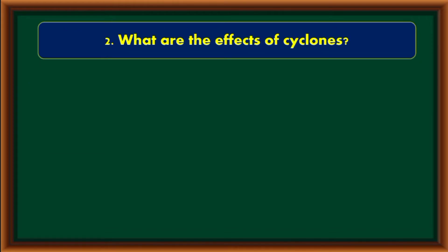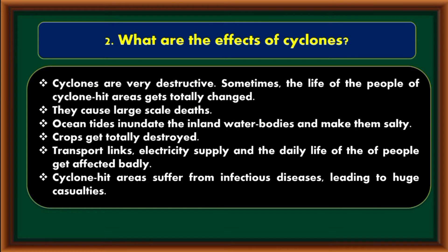What are the effects of cyclones? Cyclones are very destructive. Sometimes the life of the people of cyclone-hit areas gets totally changed. They cause large-scale death. Ocean tides inundate the inland water bodies and make them salty. Crops get totally destroyed. Transport links, electricity supply, and the daily life of the people get affected badly. Cyclone-hit areas suffer from infectious diseases leading to huge casualties.